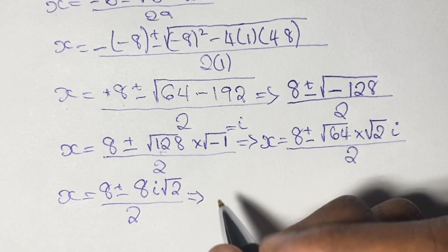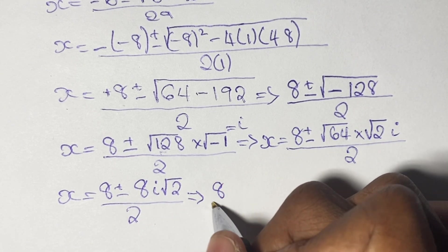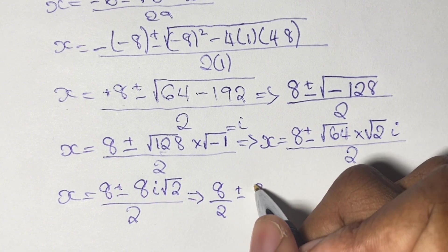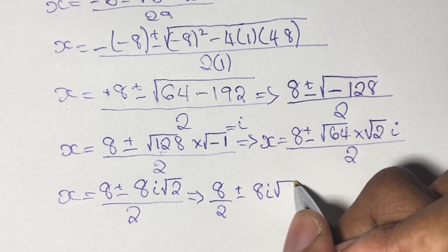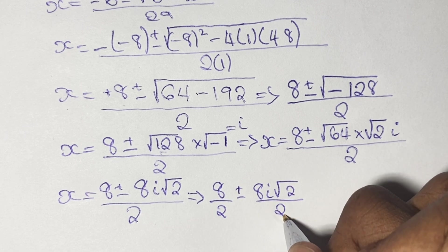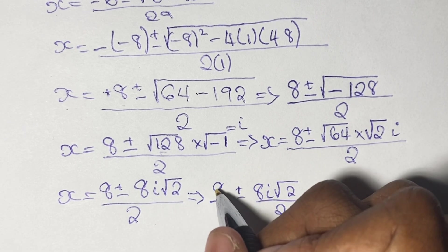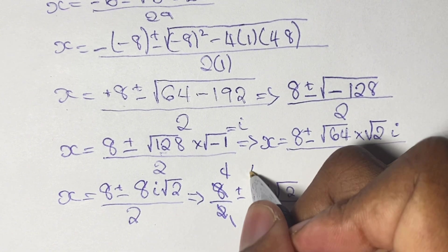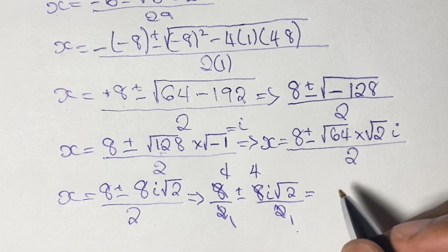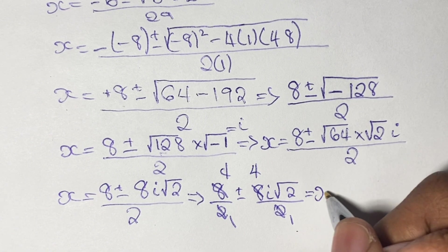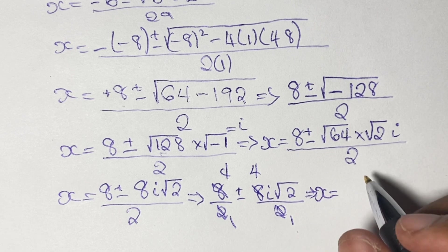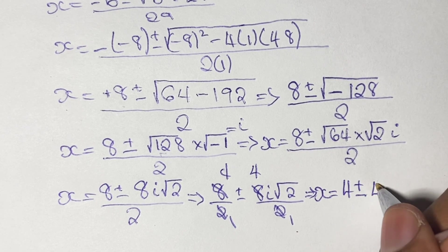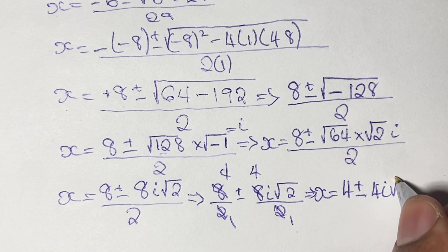Our solutions for x can be simplified: the square root of 64 is 8, so we have x is equal to 8 plus or minus 8i times the square root of 2, all divided by 2. This can be expressed as 8 divided by 2, plus or minus 8i times the square root of 2 divided by 2. Dividing both terms by 2 gives us our final solution: x is equal to 4 plus or minus 4i times the square root of 2.